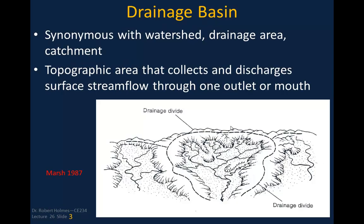The drainage basin is basically another word for watershed, drainage area, or catchment. That's a topographic area that collects and discharges surface stream flow through one outlet or mouth. You can see a relief map here with various streams coming together into a bigger stream at the outlet. The dashed line is essentially the drainage divide — water falling on one side flows out one end, and rain on the other side goes the other way.